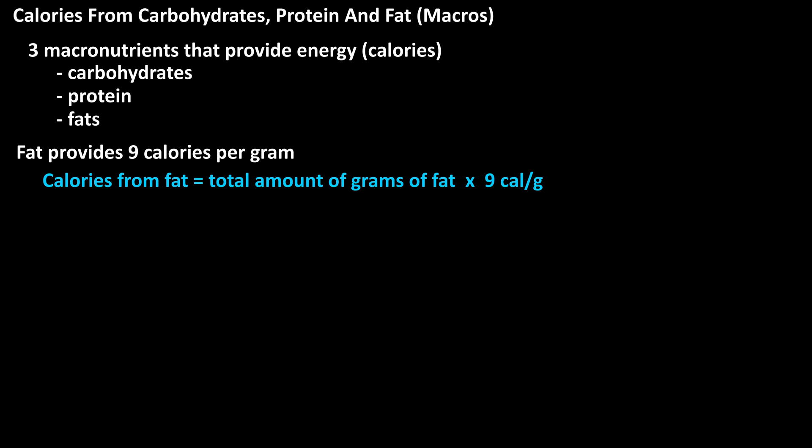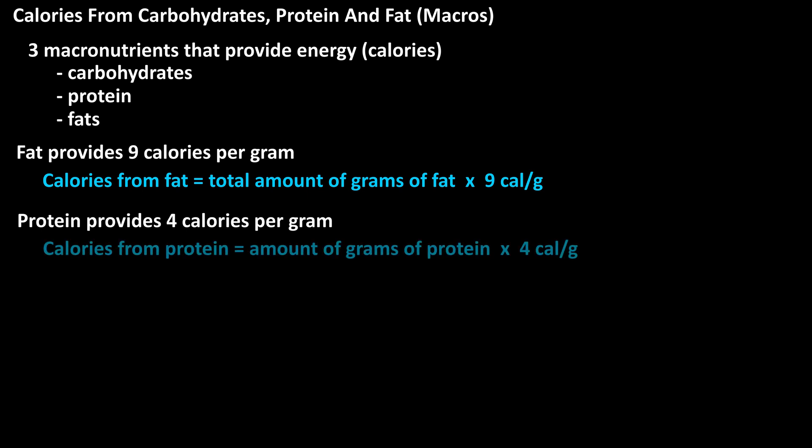Now for protein. Protein provides four calories per gram. So to calculate the number of calories from protein for a particular food item, it would be: calories from protein equals the amount of grams of protein times four.